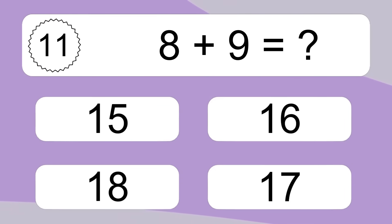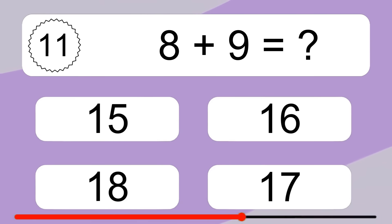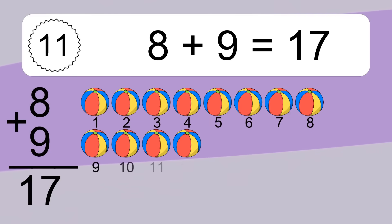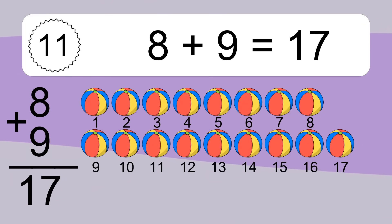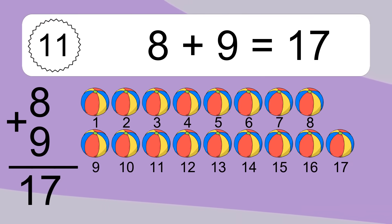8 plus 9 equals what? 8 plus 9 equals 17. Let's count it: 1, 2, 3, 4, 5, 6, 7, 8, 9, 10, 11, 12, 13, 14, 15, 16, 17.